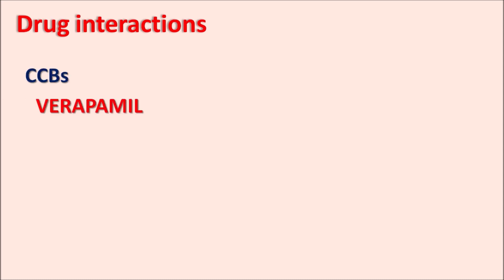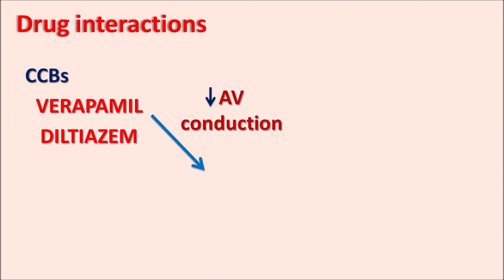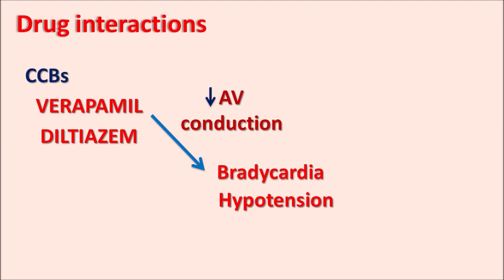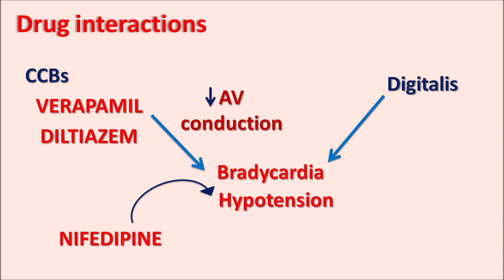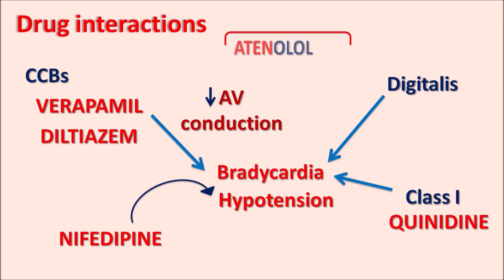Now let us see the drug interactions of atenolol. Calcium channel blockers like verapamil and diltiazem act on the heart and can reduce atrioventricular conduction, producing bradycardia and hypotension. Another calcium channel blocker, nifedipine, is a dihydropyridine selective for vascular smooth muscle and can produce hypotension. Cardiotonics like digitalis can also produce bradycardia, and class-1 antiarrhythmic agents like quinidine can also produce bradycardia. Since atenolol also reduces AV conduction, combining any of these drugs with atenolol can produce severe bradycardia and hypotension.